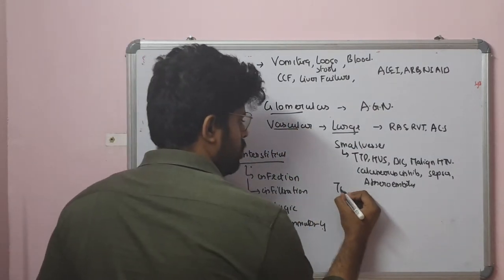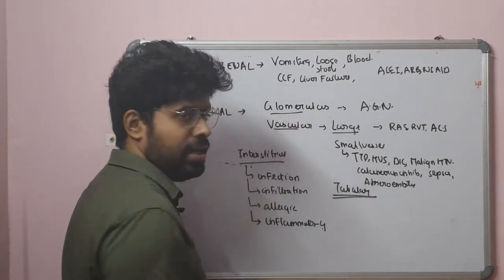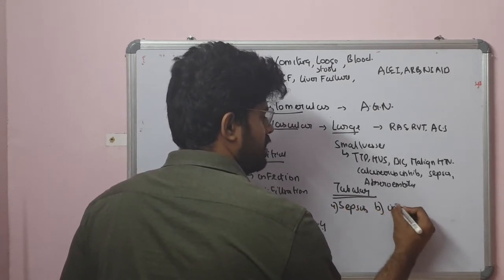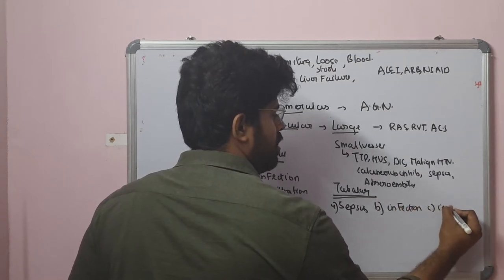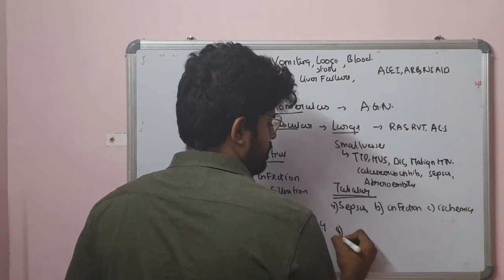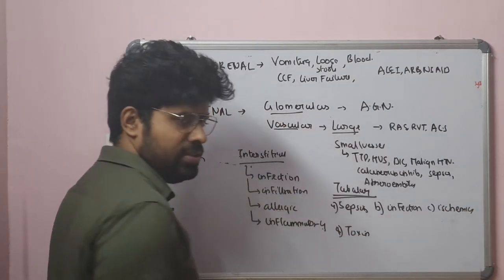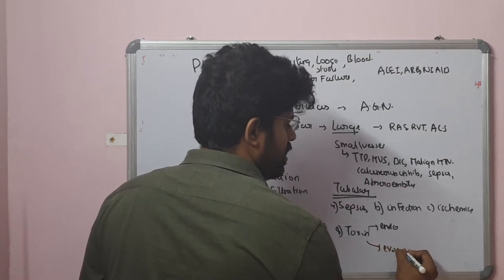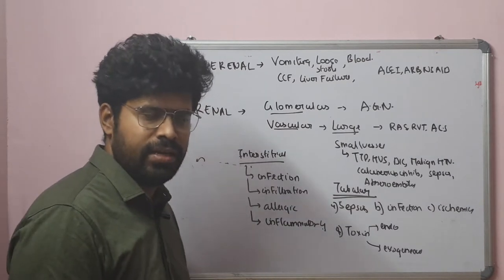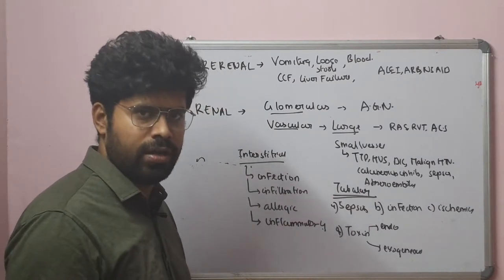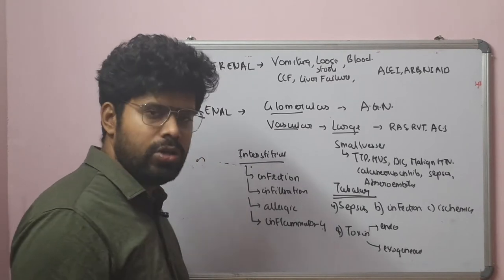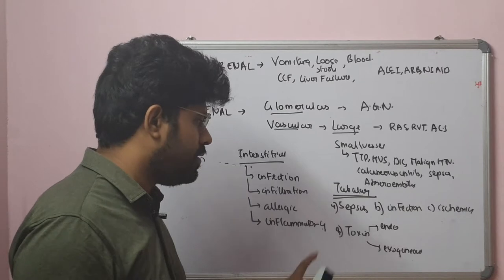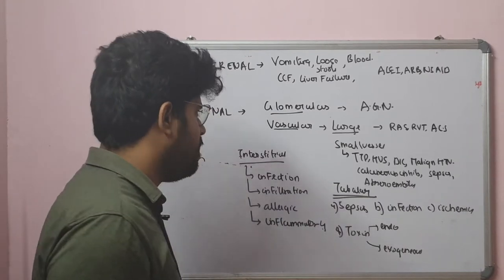The tubular is the fourth group of intrinsic renal causes. Tubular injury can be secondary to sepsis, infection, ischemia, or toxins. Toxins can be either endogenous or exogenous. Exogenous toxins include administered cisplatin or imaging dyes, or antibiotics. Endogenous toxins include hemoglobin, myoglobin, uric acid, and light chains — all of which can cause endogenous toxin-induced AKI.